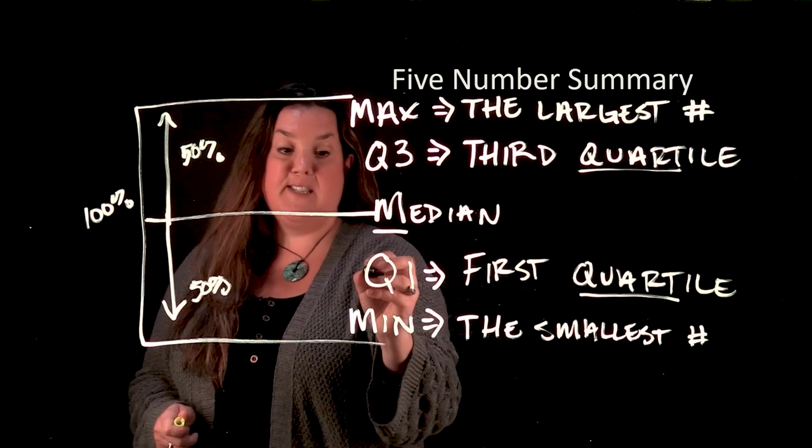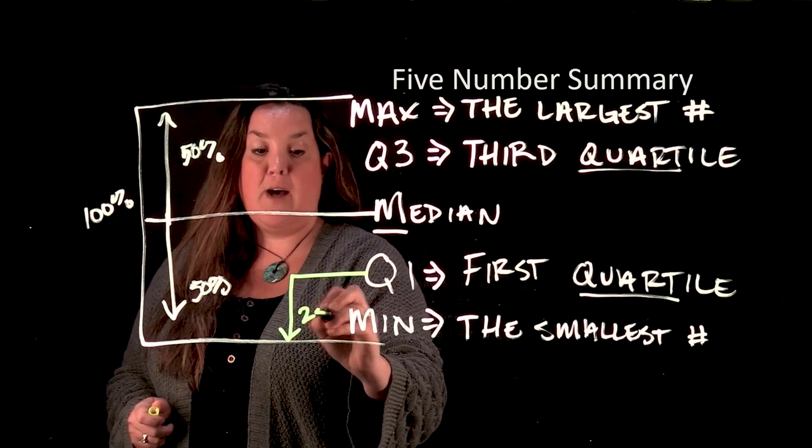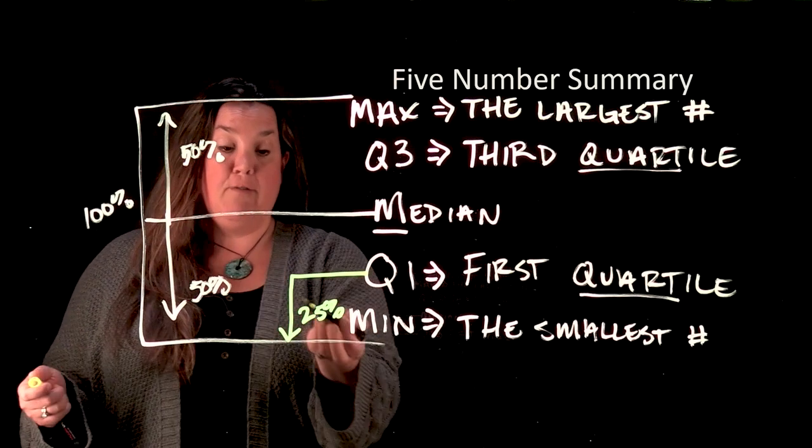With Q1, because it's the first quartile, that means there would be 25% below that. And what percent would be above it? Well, it'd be the remainder of the 100, right? 75%.